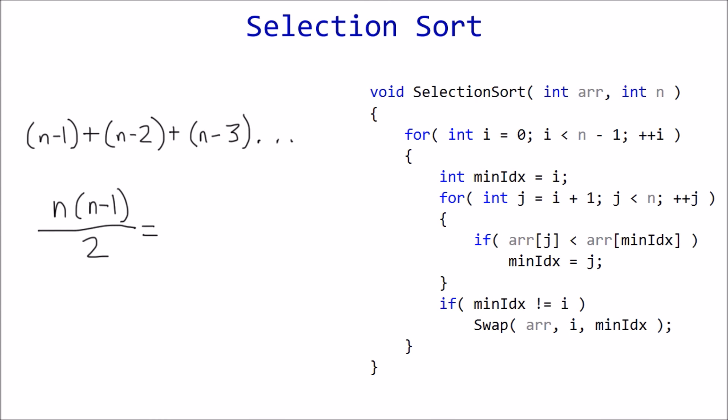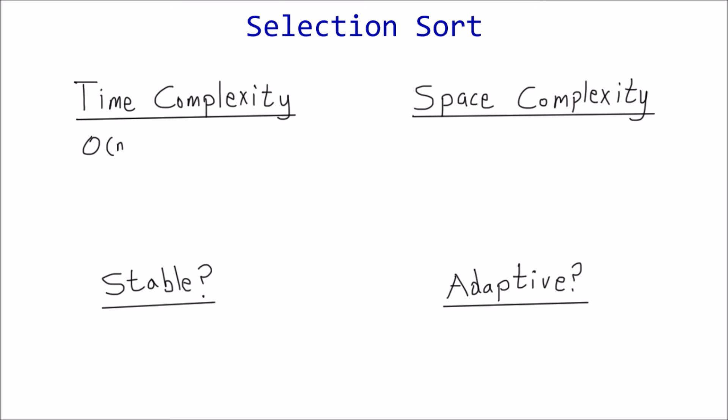Written in polynomial form, it evaluates to n squared minus n over 2. However, big O notation only cares about the highest order term of a polynomial, so the time complexity of selection sort is order n squared, which is worst case.